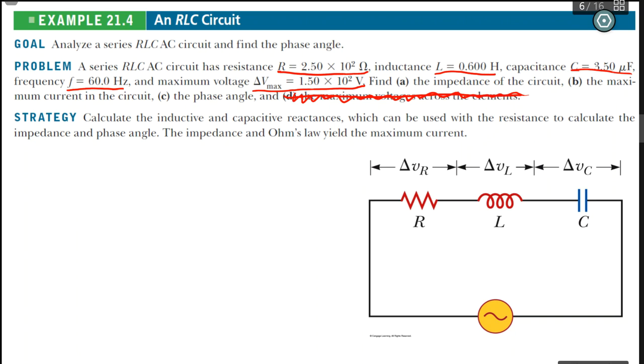That is, find the impedance, find the maximum current in the circuit, and the phase angle. All those three things we're going to need later on. So those identify the goals as well. Let me underline that in blue.